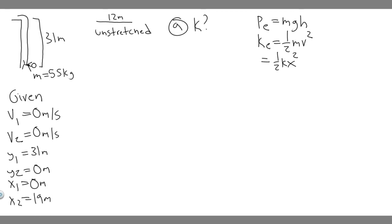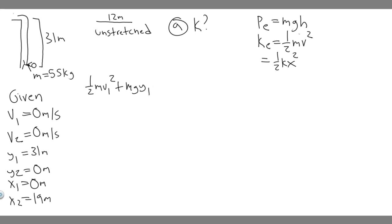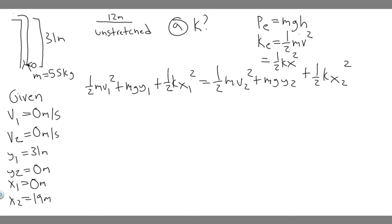Now we set up the energy conservation equation. All the energy at state 1 equals all the energy at state 2: one-half MV1 squared plus MGY1 plus one-half KX1 squared equals one-half MV2 squared plus MGY2 plus one-half KX2 squared. We just plug in all our variables and notice that many of them are zero, which will cancel out a lot of terms.